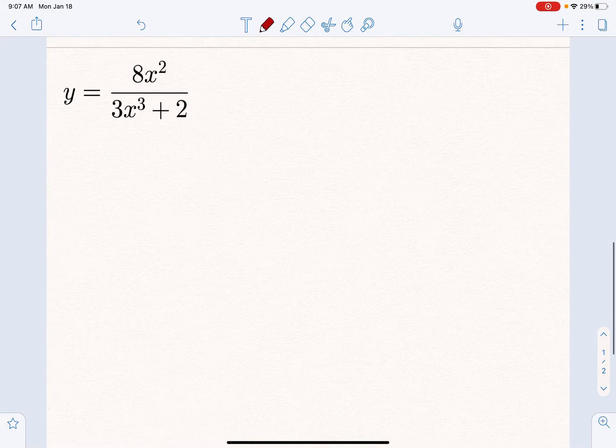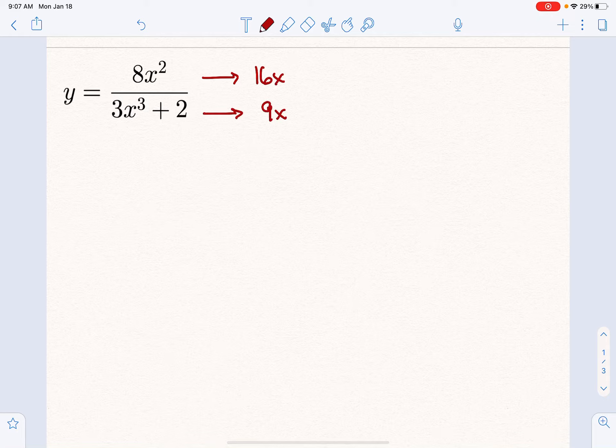Let's try another one. If you want to try this one on your own, go for it—pause the video, and when you get back, you'll see it being worked out. To start this off, I know it's another quotient, so I need the derivative of the numerator, which is 16x, and the derivative of the denominator, which is 9x².